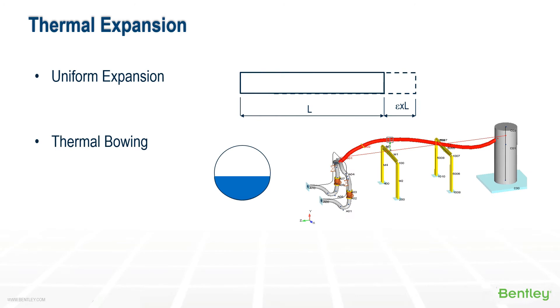The next category is thermal bowing, which can occur when pipes are partially filled or if the pipe becomes hot due to sunlight. This condition can cause the pipe to bow and lift off supports. AutoPipe can describe this special condition and analyze for it if required.